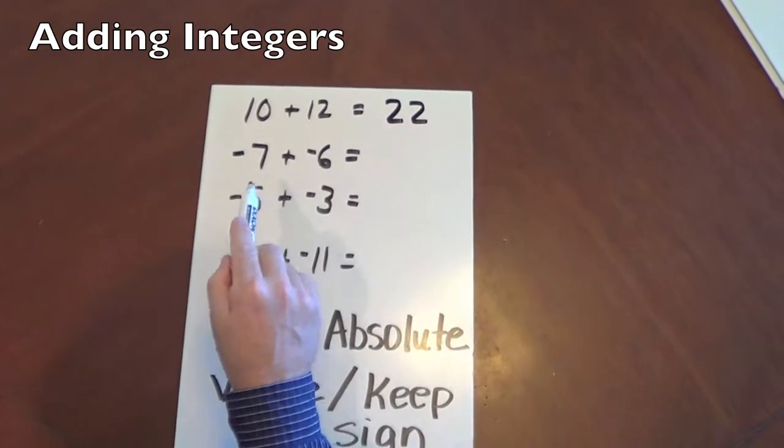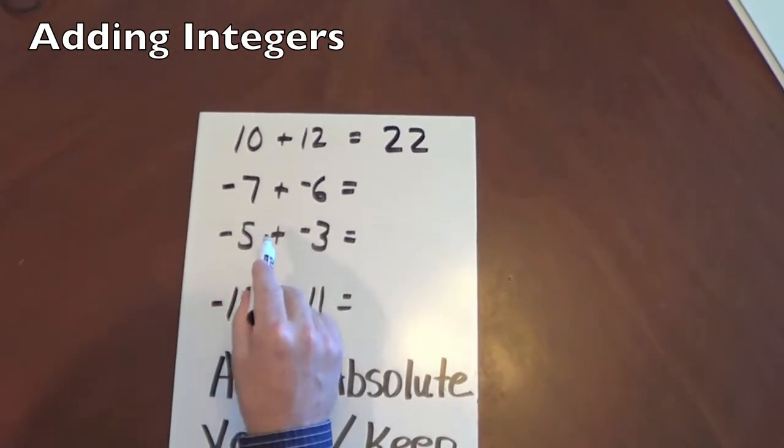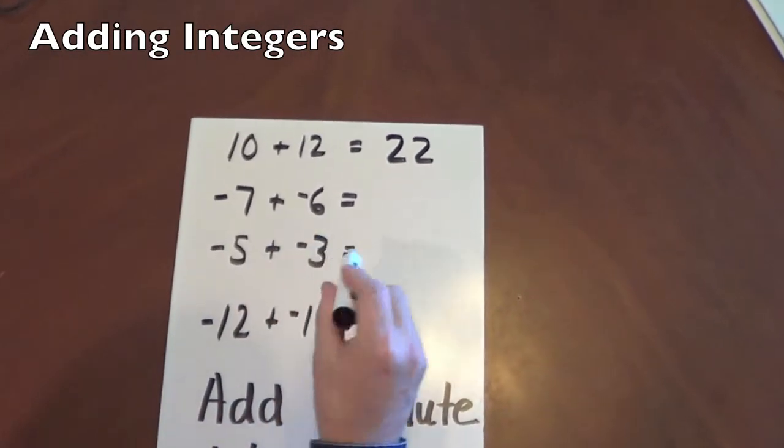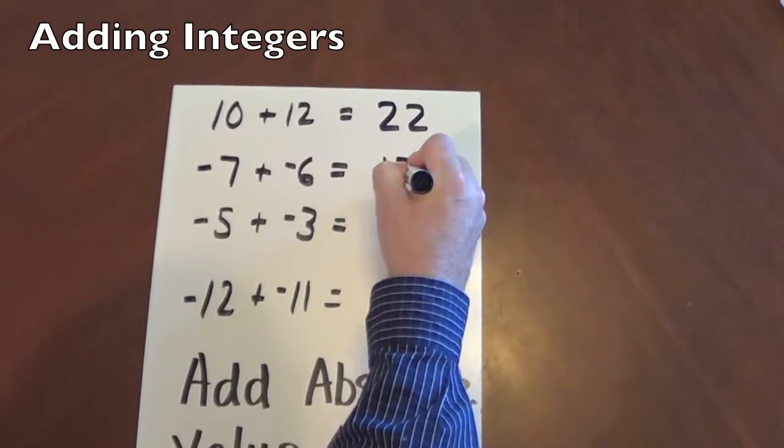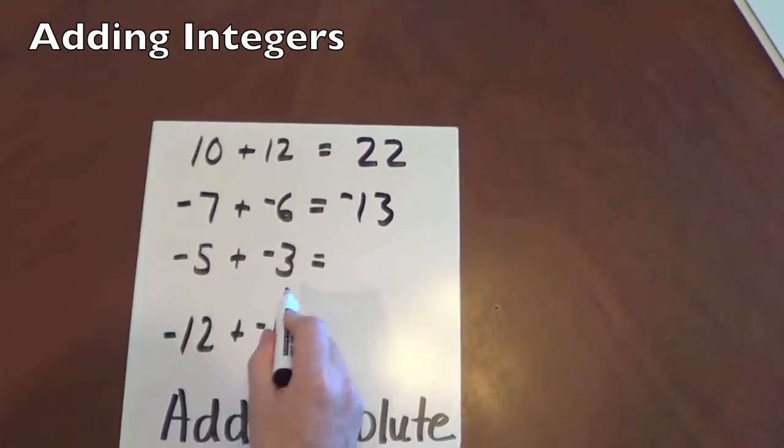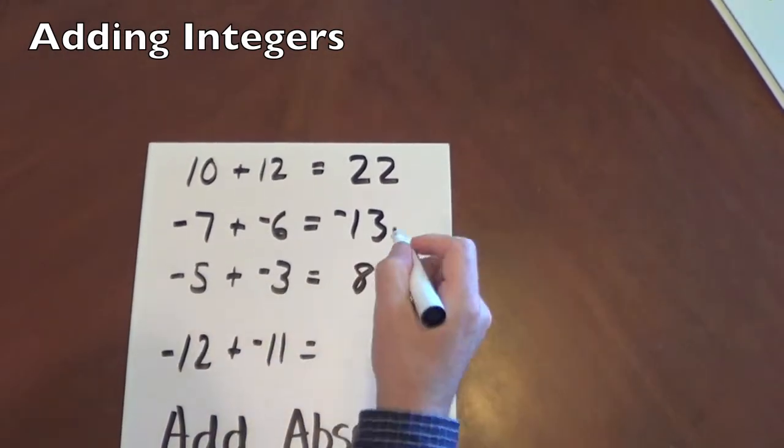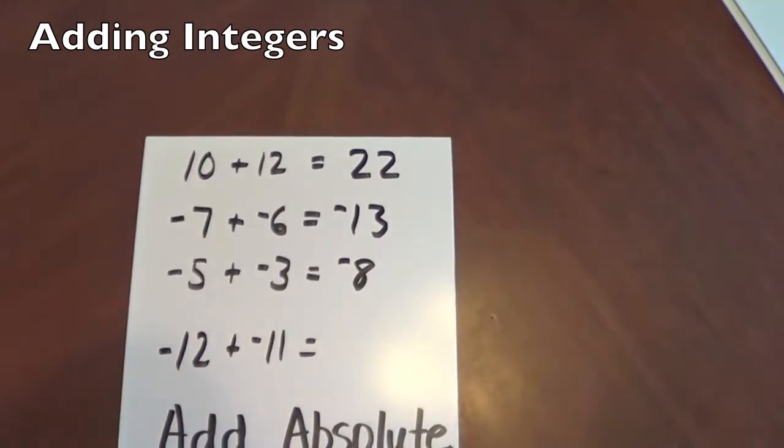Now, when we have two negatives and we're adding, we're going to add the absolute value. So the absolute value of 7 is 7. The absolute value of 6 is 6. You add them. That's 13. And we keep the sign. Negative. Same thing with 5 and 3. The absolute value of 5 plus 3 is 8. And we keep the sign as negative.